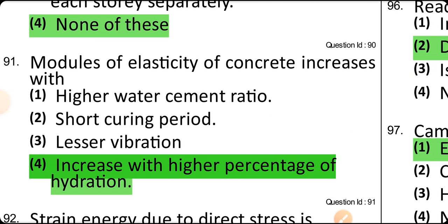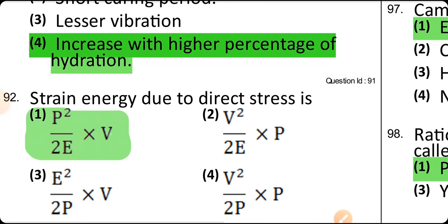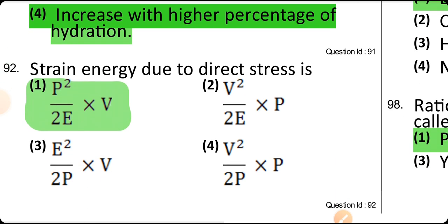Modulus of elasticity of concrete increases with an increase in the percentage of aggregate. Strain energy due to direct stress is P²/2E × V.